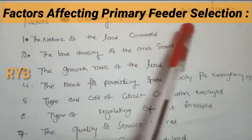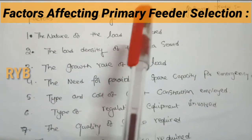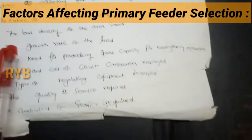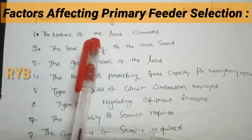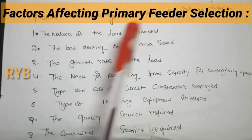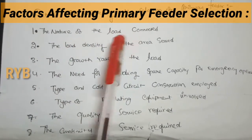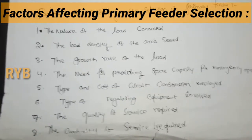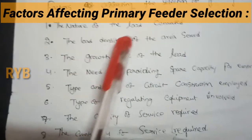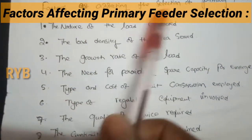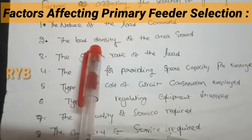The factors affecting the selection of a primary feeder are now discussed. The primary feeder comes under the primary distribution system. The first factor is the nature of load connected — whether it is industrial, agricultural, or other load types. The second factor is the load density of the area. Load density is the total load divided by the total area.